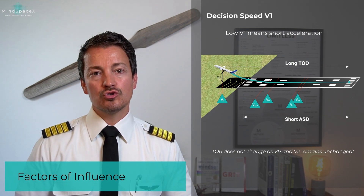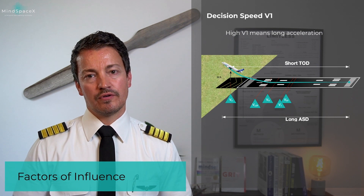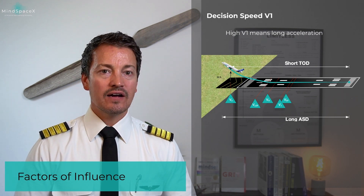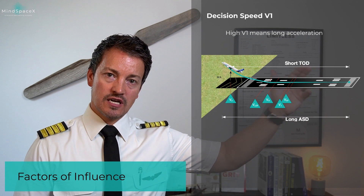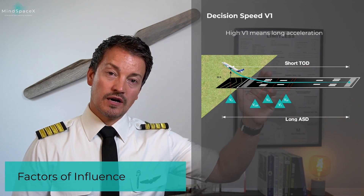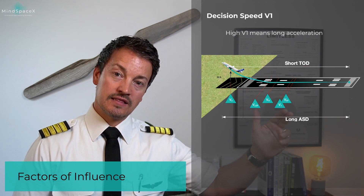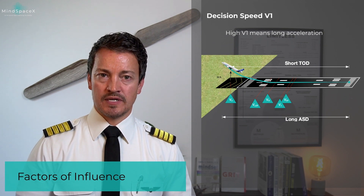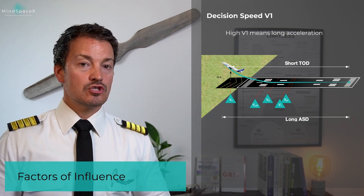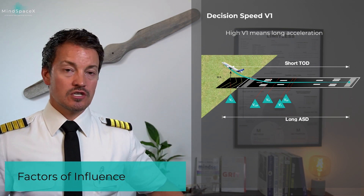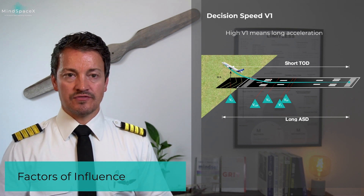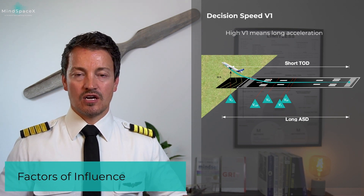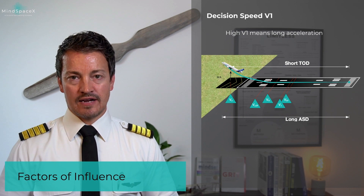If you choose a high V1 value, you'll have the opposite. A higher V1 value gives you a shorter takeoff distance, but at the expense of a long accelerate-stop distance. The accelerate-stop distance must, of course, as well as the takeoff distance, be within the available distances on that runway.